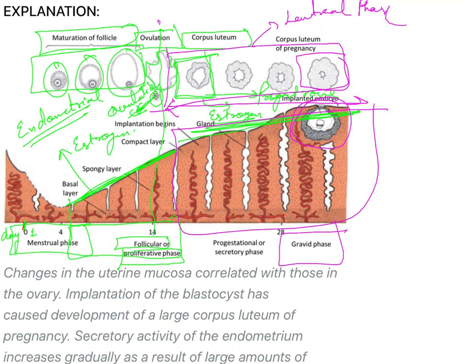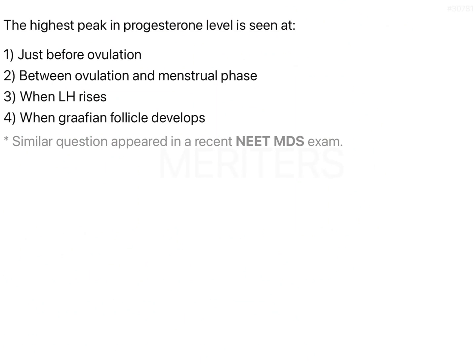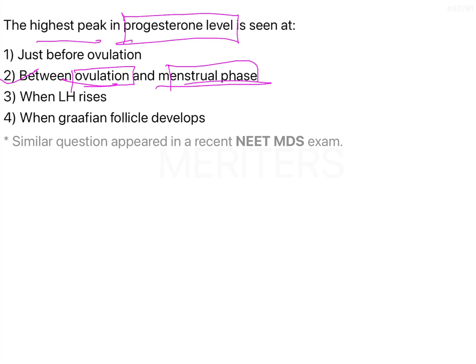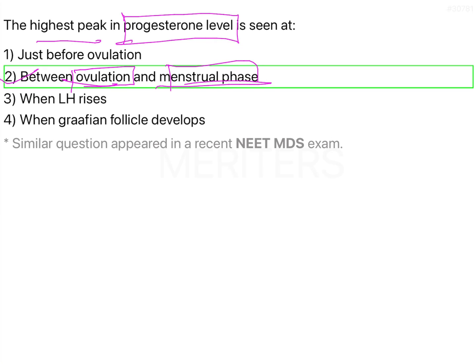On the 14th day there is ovulation, and just after ovulation the corpus luteum forms and begins secreting progesterone. The highest peak in progesterone level is seen between ovulation and the menstrual phase — just after ovulation the corpus luteum starts releasing progesterone as well as estrogen, but progesterone reaches its highest peak right after ovulation. So the correct answer is option 2: between ovulation and menstrual phase.